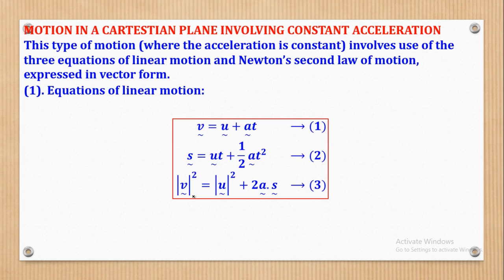For the third equation, it's somewhat unique because we cannot multiply two vectors. Since there is a square on the third equation of motion, we have to use the magnitude. The magnitude is what we square, because we can't multiply two vectors — we can either dot or cross. So the same applies to initial velocity; it has to be magnitude because of the square, then plus 2A·S. There is a dot, meaning we are going to dot A with S. Between two vectors there will be a dot, and this dot has to be visible when you are quoting this equation.